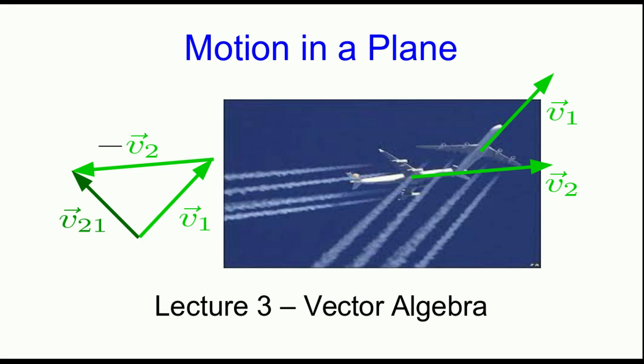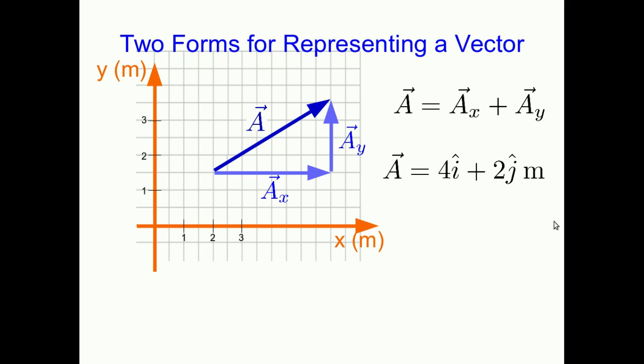The first thing we need to do though is learn how to go back and forth between component form and magnitude direction form. So here is this vector and I've imposed a grid on it which has allowed me to write down that it is 4i hat plus 2j hat in meters and you learned to do that way back in an earlier unit of the course. If you don't then go back and review that video lecture.